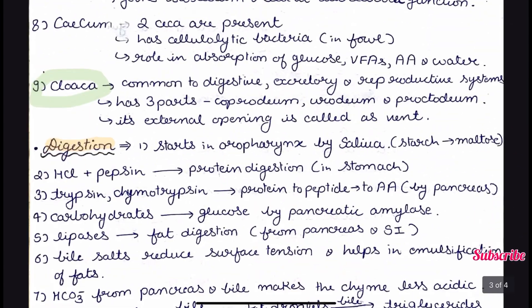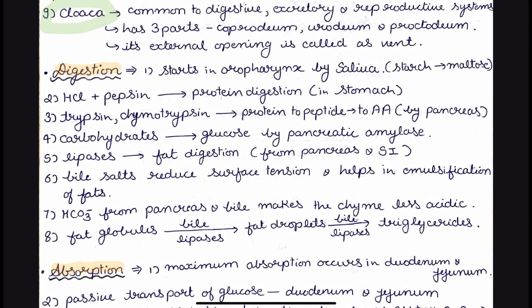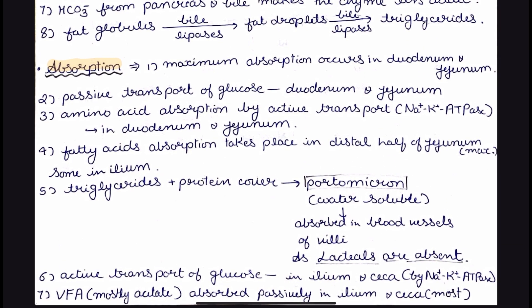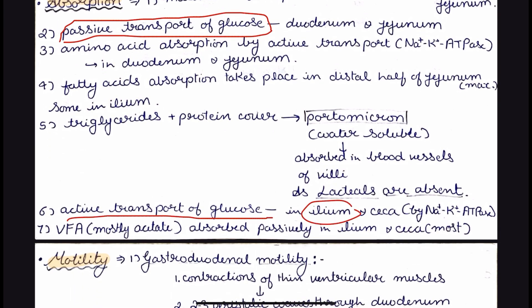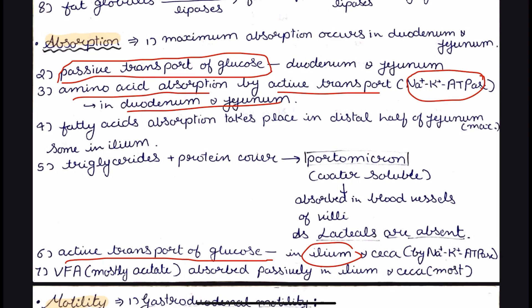The digestion process is very similar to mammals, but what is different is the absorption process. Passive transport of glucose takes place in the duodenum and jejunum, while active transport of glucose takes place in the ileum. Amino acid absorption takes place by active transport, with a sodium-potassium ATPase pump present in the duodenum and jejunum. Volatile fatty acid, which is mostly acetate in case of birds, is absorbed passively in the ileum and ceca, and is mostly absorbed in the ceca.